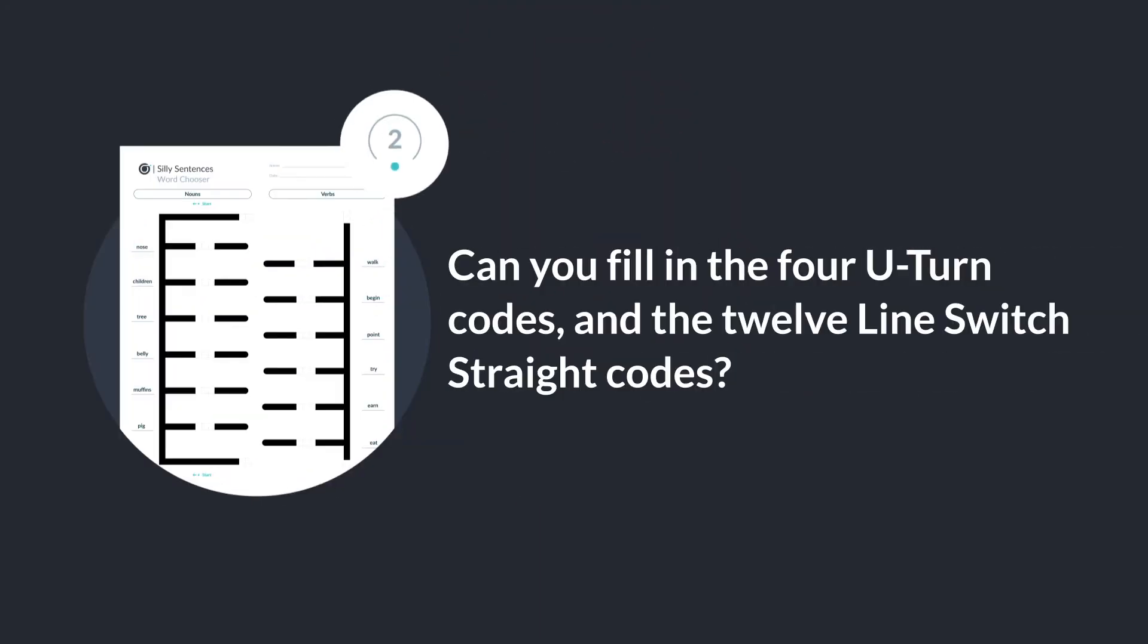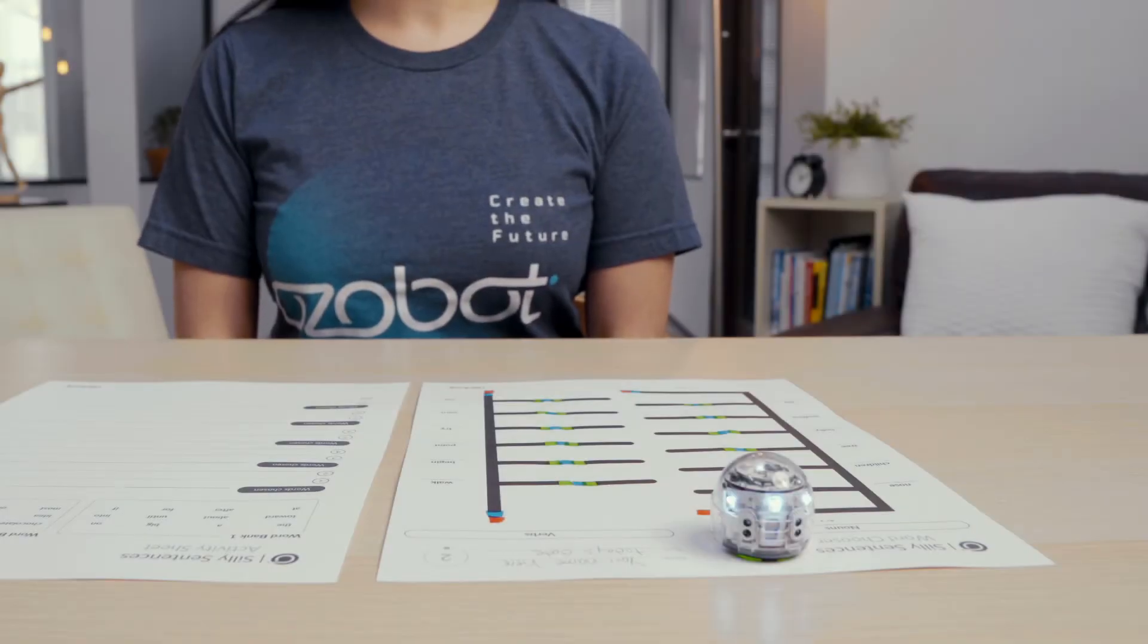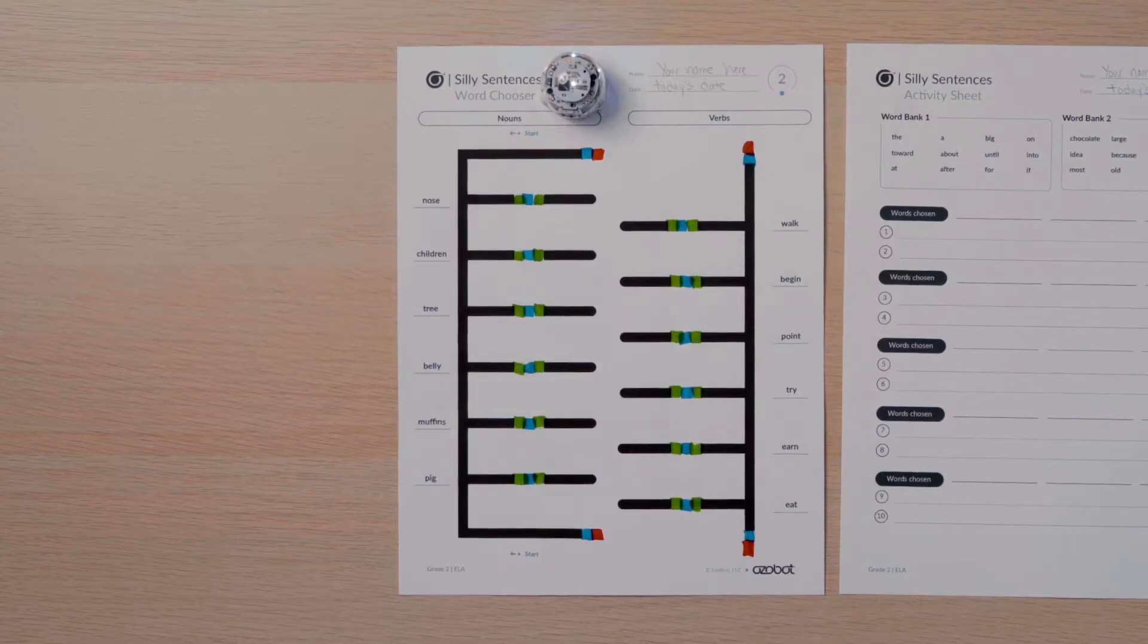Can you fill in the four U-turn codes and the 12 line switch straight codes? Now that the color codes are ready, your Ozobot will choose some words. Notice there are words next to each intersection. The words on the left side are nouns and on the right side are verbs. The chooser is set up as a loop, so your bot will travel from one side to the other until you pick up your bot.